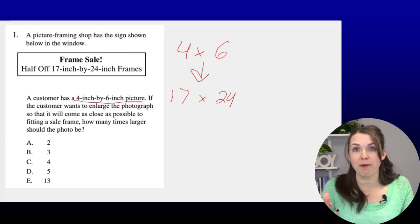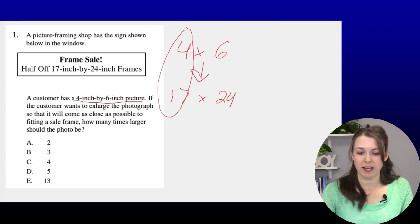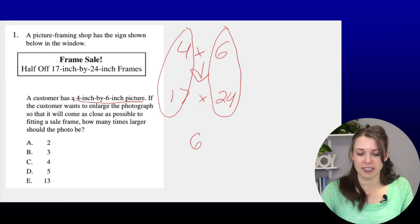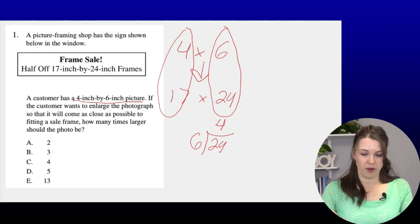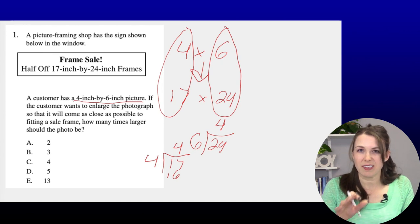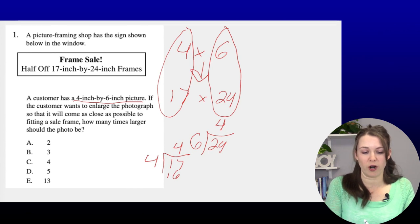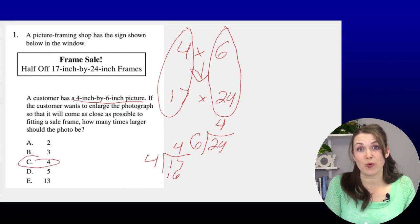I always like to solve the problem first, then look at the answer. The 4 and 17 are buddies, and the 6 and 24 are buddies. If I take 6 and divide it into 24, I get 4. Same with 4 and 17 — 4 goes into 17 about 4 times (it's actually 16, but it says it doesn't have to fit exactly). Both numbers give me 4, so the answer is C, which is 4.